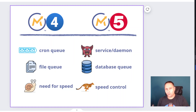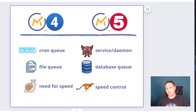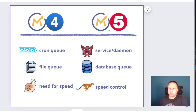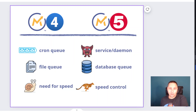In Mautic 4 we used to have a file queue; now we have a database queue. In Mautic 4 the challenge was to send fast because the emails were going out really slowly. In Mautic 5 we rather have to limit the speed, or do different kinds of speed control measures, in order to make sure we are complying with the maximum allowed sending speed of our SMTP provider.